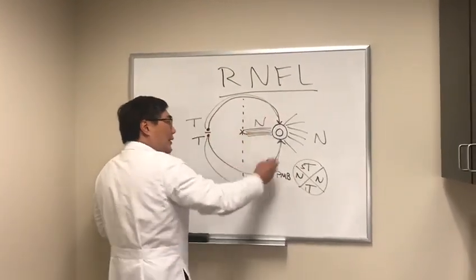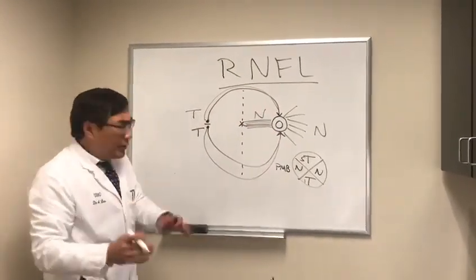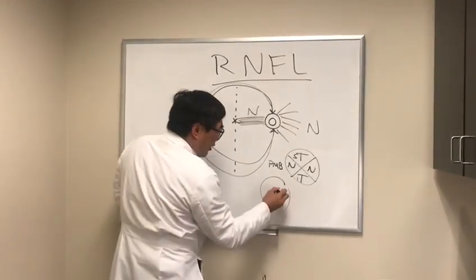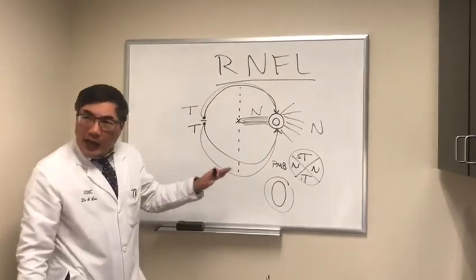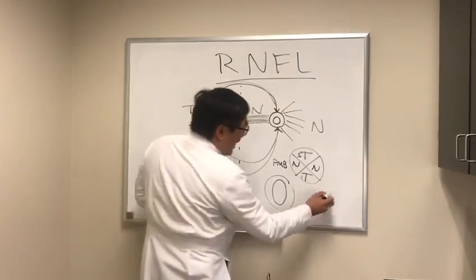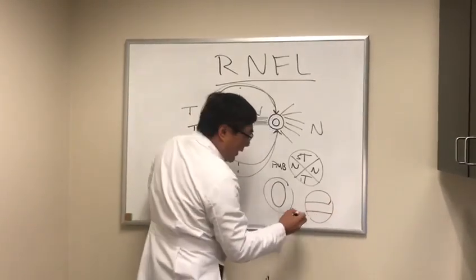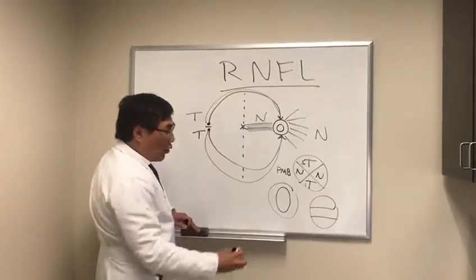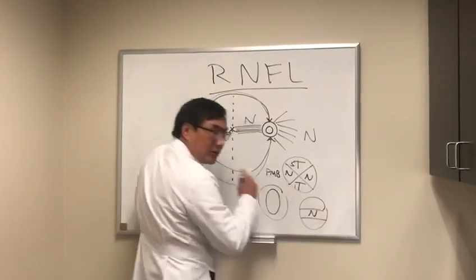So if we see atrophy nasally like a band across, or cupping like a band across the nerve, that is the nasal fiber. The reason this is important to know about the retinal nerve fiber layer is